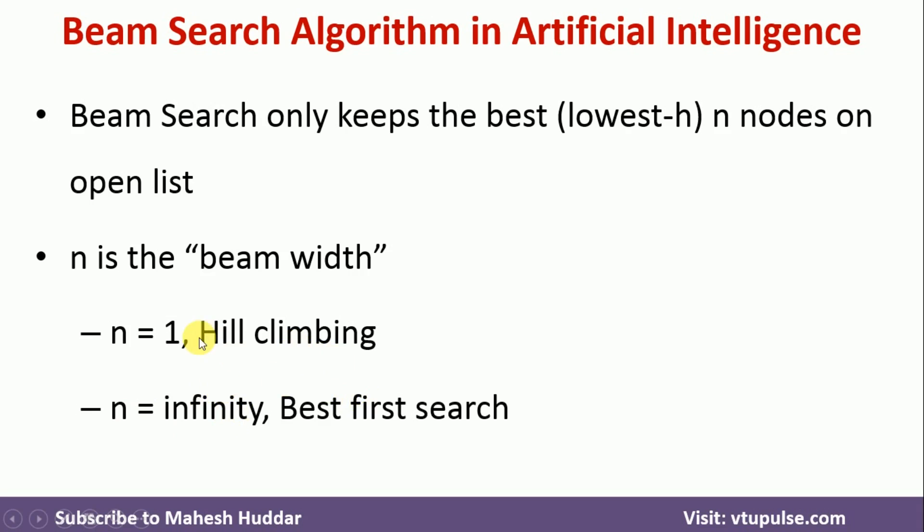So this is the two extremes what we have. Either we can select N is equal to 1, where we don't give importance to all the successors. Other extreme is we can consider N is equal to infinity, we consider all the successors, that is the best first search algorithm.